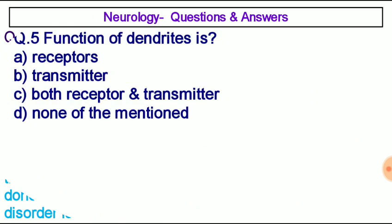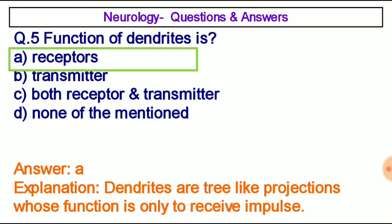Question number five: The function of dendrites is — option A: receptors, option B: transmitter, option C: both receptor and transmitter, option D: none of the mentioned. The correct answer is option A, receptors. Dendrites are tree-like projections whose function is only to receive impulses.